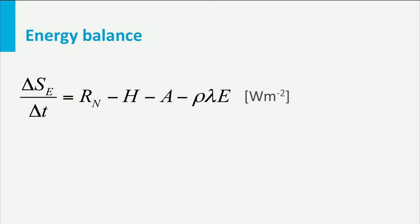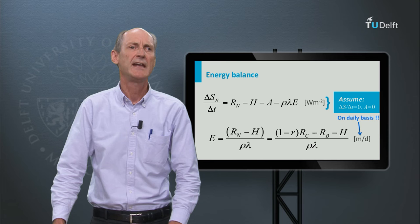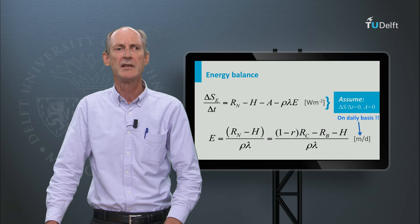The energy balance states that the change of energy stored in the ground equals the net incoming radiation minus the sensible heat flux H minus the latent heat of evaporation rho times lambda times the evaporation, with all energy terms in watts per square meter. Assuming that over a day the change of stored energy is negligible and neglecting advection, this results in an expression for evaporation depending on the balance between net incoming radiation and the sensible heat flux.